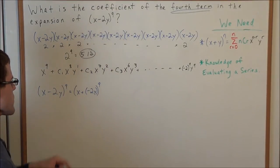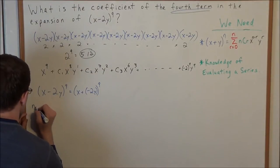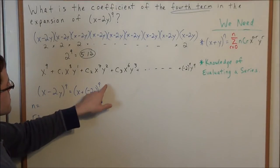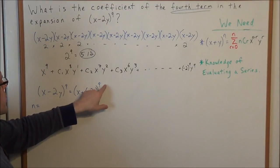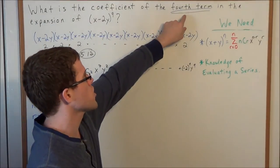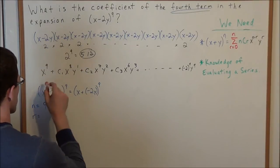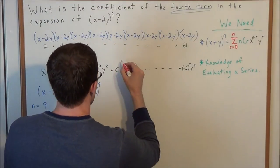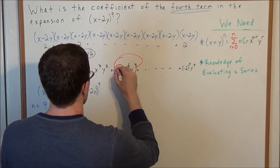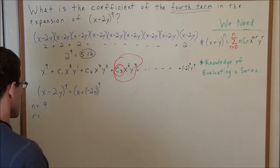So now we can go ahead and substitute. With these problems, it's important that we find an n value and an r value. The n value is determined by the exponent of your binomial — in this case our exponent is 9. And r is determined by what term we're looking for. We're looking for the fourth term — the 1, 2, 3, 4th — specifically the coefficient, the number in front of the x to the sixth y to the third piece.